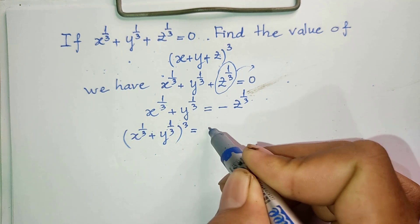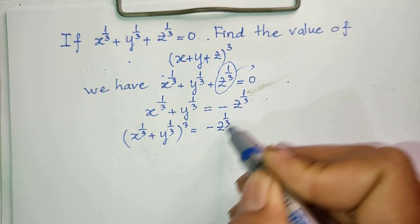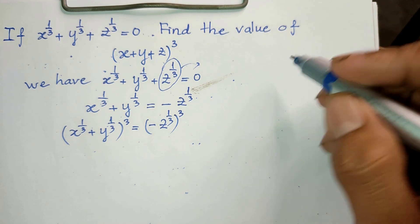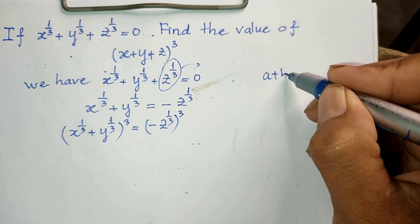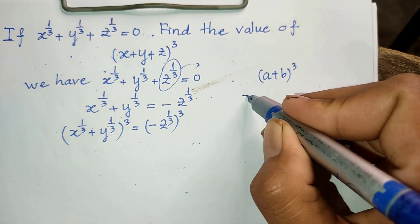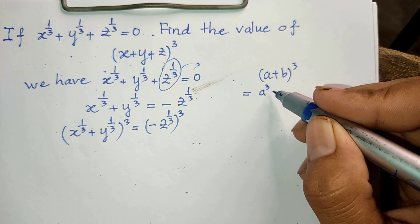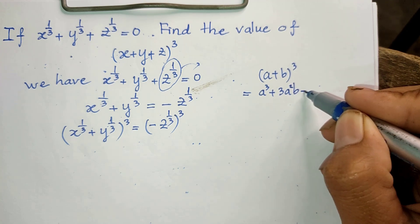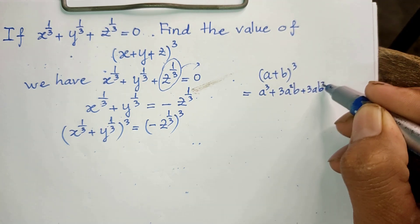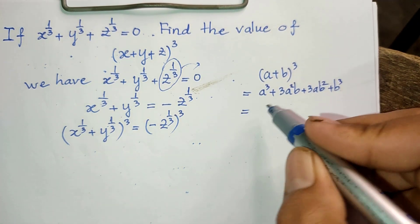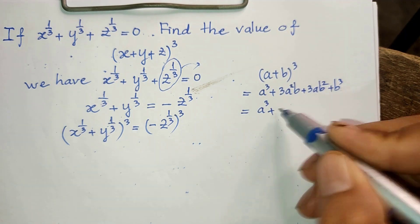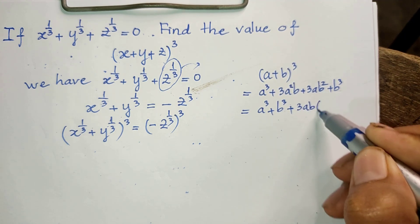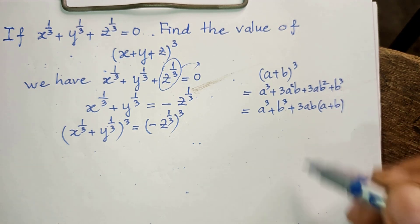Now, using the identity: (A + B)^3 = A^3 + 3A^2·B + 3A·B^2 + B^3, which equals A^3 + B^3 + 3AB(A + B). We will apply this rule to expand the left side of our equation.